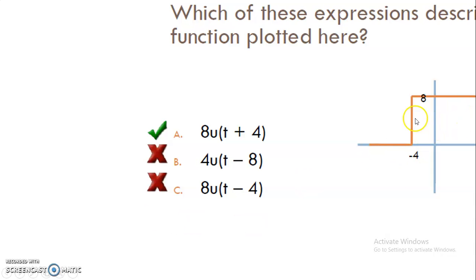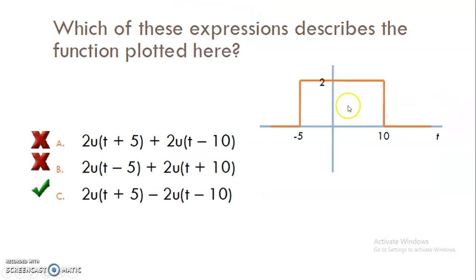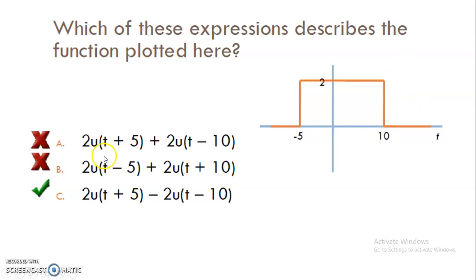A window function consists of two unit functions. If two functions are together — one moving in the upper direction and the other in the downward direction — they cancel each other out, producing a window function. For example, with k equal to 2, one function is advanced: u of t plus 5, and the other is delayed: u of t minus 10. They are subtracted, giving us the step window function.